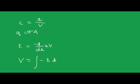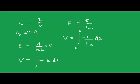The potential V is equal to the integration of minus E dx. We know from Gauss's law that the electric field at any point between the two charged plates is given by sigma over epsilon naught. Substituting, the potential V equals the integration from d to 0 of minus sigma over epsilon naught dx. Integrating this, we get V equals sigma d over epsilon naught.